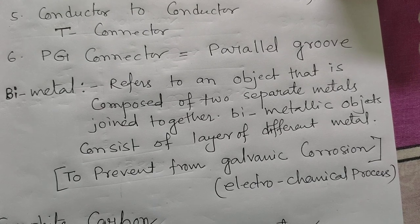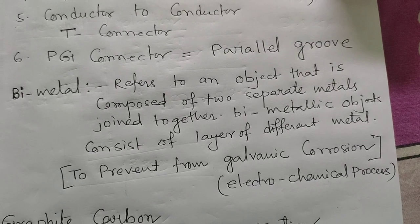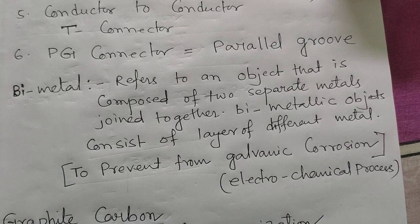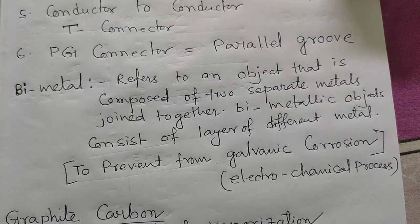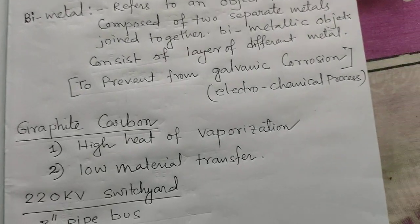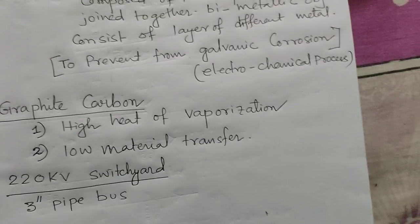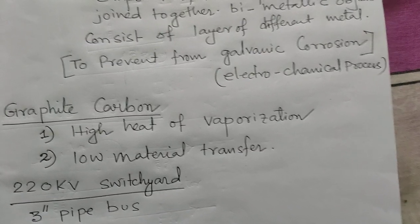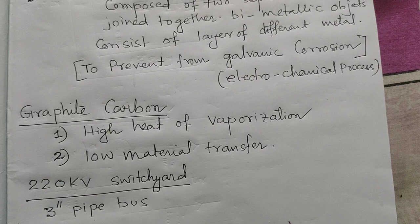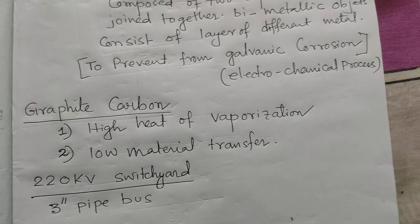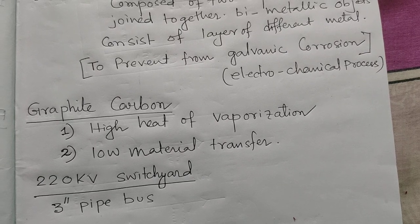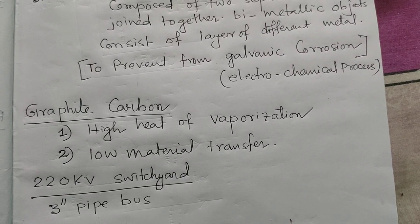We use bimetals between the copper stud of the substation and the aluminium connectors. We have attached some pictures related to the clamp connectors — how they are being used at substations, at substation studs, isolator studs, and pipe-to-pipe connectors. Graphite carbons are being used nowadays to strengthen the systems.